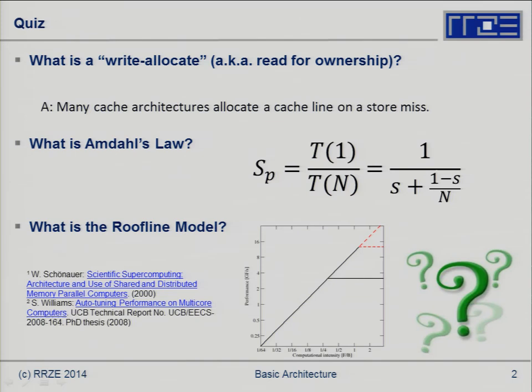The roofline model describes these two limits. It's a very simple but extremely powerful model. There's a metric called computational intensity: how many flops per byte transferred from memory. It predicts performance in gigaflops per second, usually applied on a loop-by-loop basis. We make this analysis for every loop and get a performance prediction for each one.